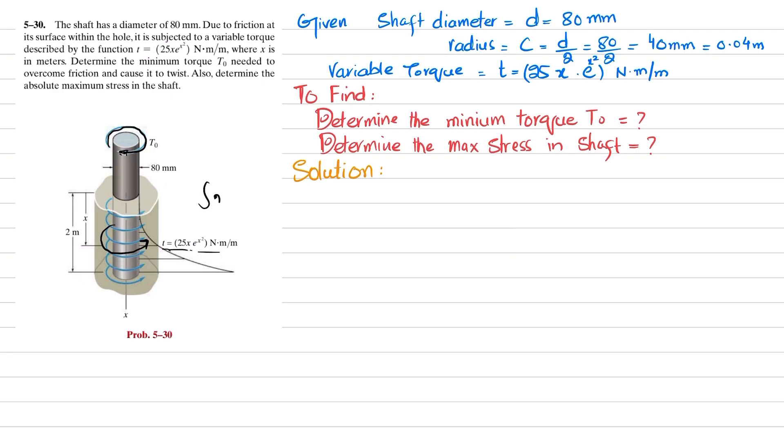We have been given small t is a variable torque equal to 25xe^(x²), units are in newton-meters per meter. This applied torque T₀ will be equal to the net torque, which is the integral from 0 to 2. This variable torque, if we integrate over the length, you will get the applied torque T₀.